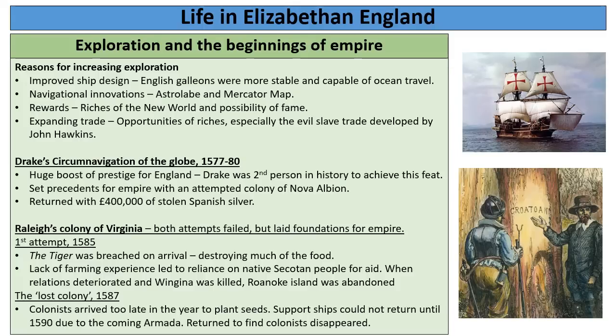The second attempt was known as the Lost Colony of 1587. The colonists arrived too late in the year to plant seeds, so again had to rely on the Native American people. The support ships meant to help them could not return to the colony for three years because Elizabeth ordered all ships to stay in England to help fight the Armada of 1588. When they did return in 1590, they found the entire colony had disappeared, with only the mysterious word 'Croatoan' carved on a tree. People speculate to this day what that means.